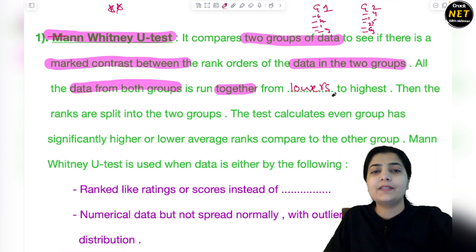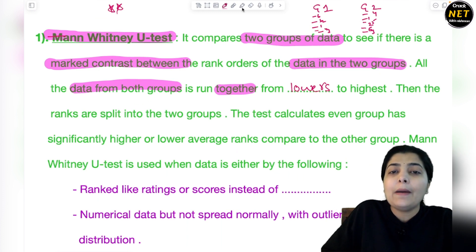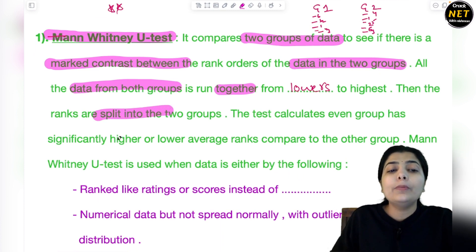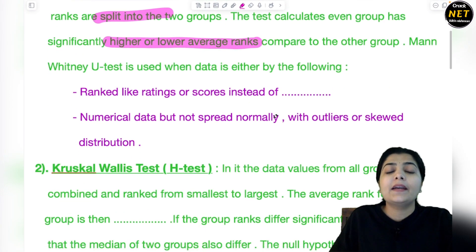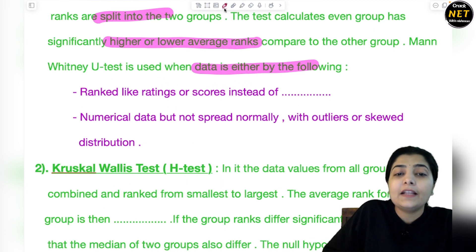All the data from both groups is run together from the lowest to the highest. First you look at the lowest rank holder, then go up to the highest in ascending order. Then the ranks are split into two groups. The test calculates whether each group has significantly higher or lower average ranks compared to the other group. That's what Mann Whitney test tells us.